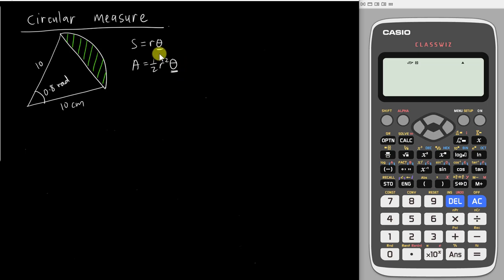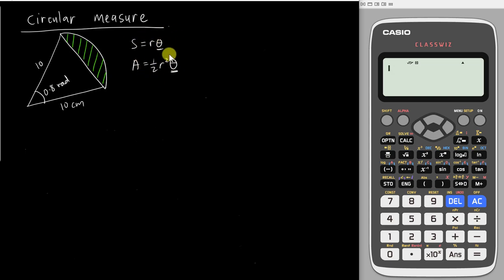What I mean is: if today the angle is 50 degrees and you substitute 50 into the formula, you will get the wrong answer, because both of these formulas are designed for radian only. So remember, both of these angles must be in radian.